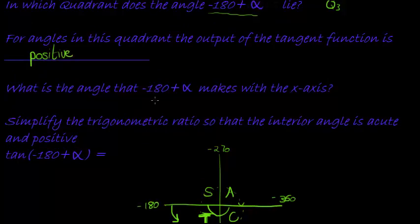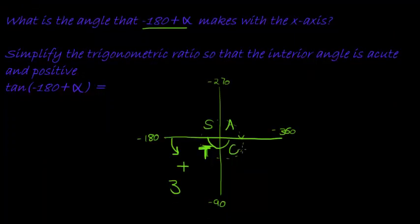Okay, what is the angle that this makes with the x-axis? So look what happens. We go all the way to 180 and then plus theta. So we go plus theta. So the angle that we are making is not theta, but alpha.